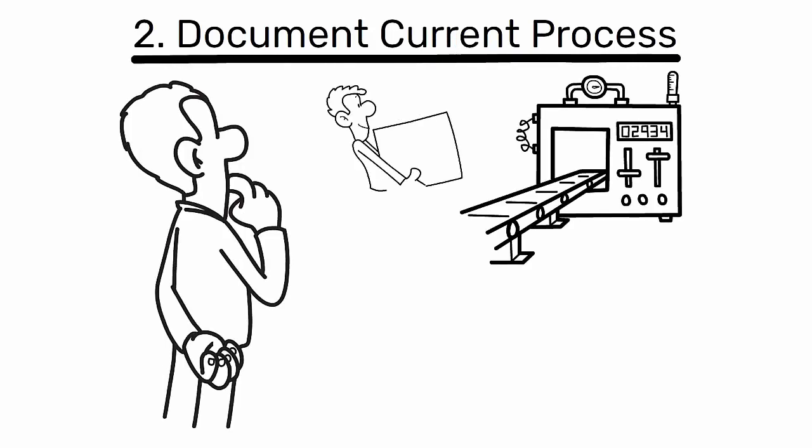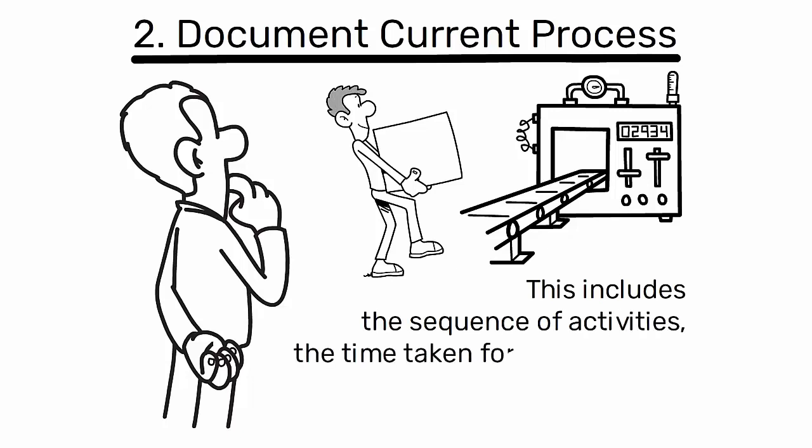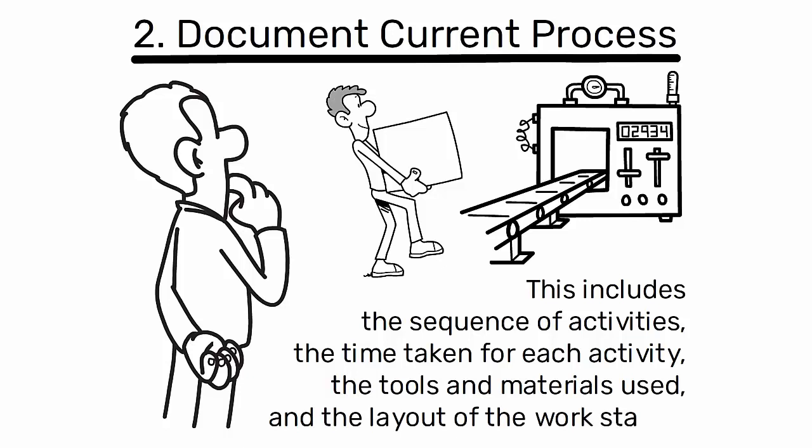2. Document current process. Observe the process in its current state and document each step. This includes the sequence of activities, the time taken for each activity, the tools and materials used, and the layout of the workstation.